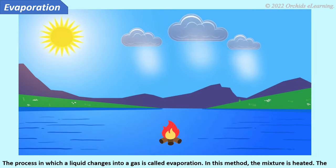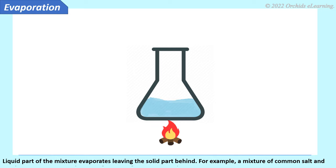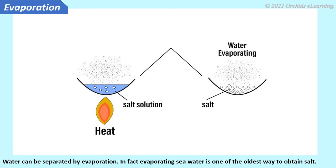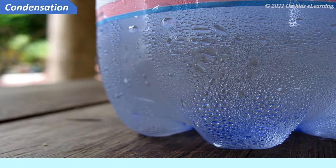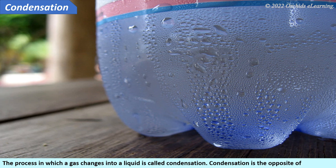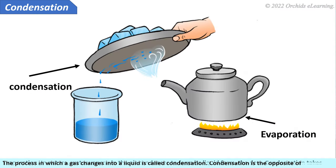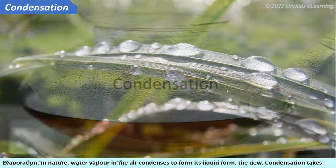Evaporation. The process in which a liquid changes into a gas is called evaporation. In this method, the mixture is heated; the liquid part evaporates, leaving the solid part behind. For example, a mixture of common salt and water can be separated by evaporation. In fact, evaporating sea water is one of the oldest ways to obtain salt. Condensation is the process in which a gas changes into a liquid — it is the opposite of evaporation. In nature, water vapor in the air condenses to form dew. Condensation takes place only when water vapor hits a cold surface.